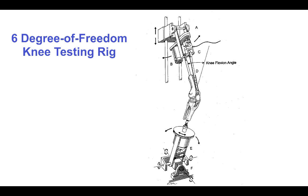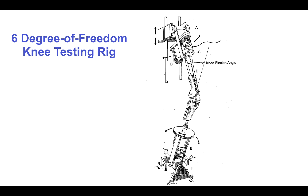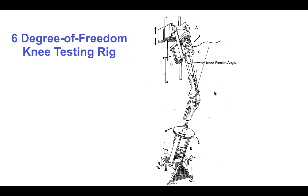One useful way to relate the mechanics of individual ligaments to joint function is to test the entire joint. A six-degree-of-freedom knee-testing rig has three displacement degrees of freedom — one along the joint axis and two transverse — plus three rotational degrees of freedom: knee flexion angle, tibial twist about the femur, and varus-valgus angle. This device can test the knee with all ligaments intact, then gradually remove ligaments one at a time and retest to measure each ligament's contribution to the mechanics of the whole knee.